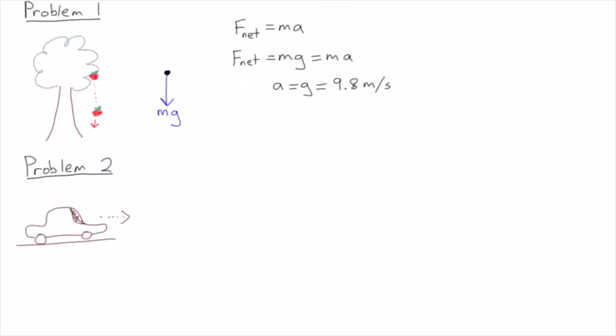For the second problem, we'll analyze a car accelerating from a stop position at a traffic light. Again, the first thing we do is draw a free body diagram.